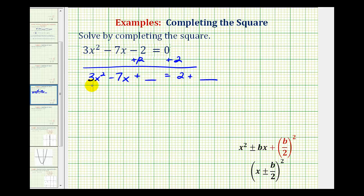We do want to make this a perfect square trinomial, but before we do this, we need the leading coefficient here to be equal to one. So what we'll have to do is divide every term by three.